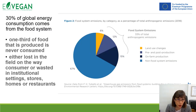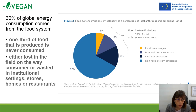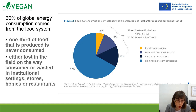30% of global energy consumption comes from food systems, and one third of food that is produced is never consumed. Food is either lost in the field, on the way to the consumer, or wasted in institutional settings, stores, homes or restaurants. We are wasting our food and we need to think about how to reuse this waste, because nothing is wasted until it's wasted.